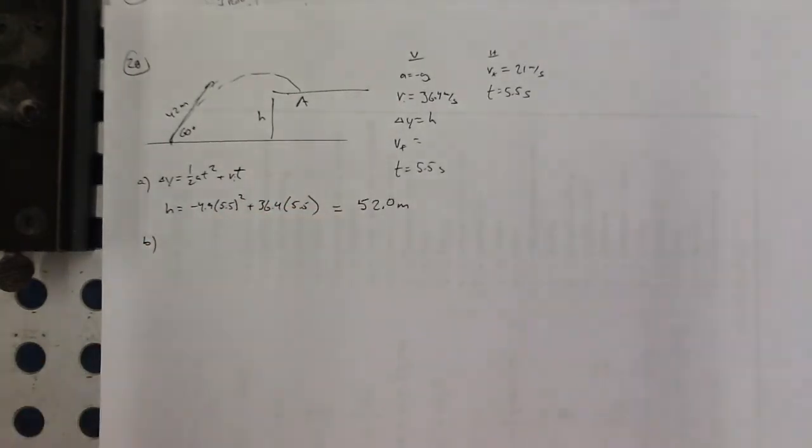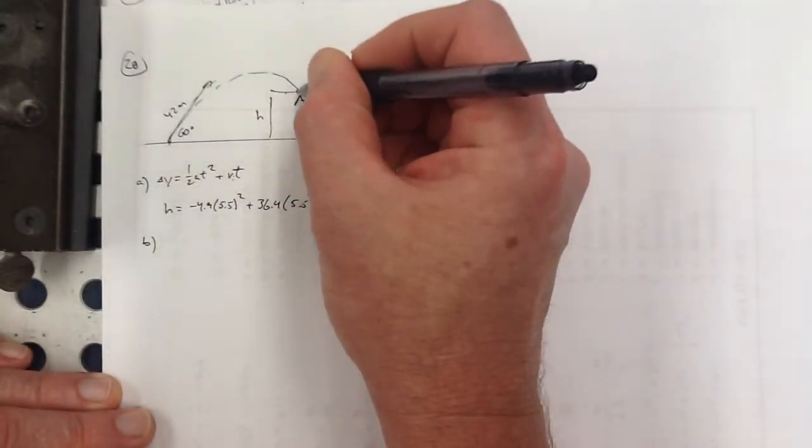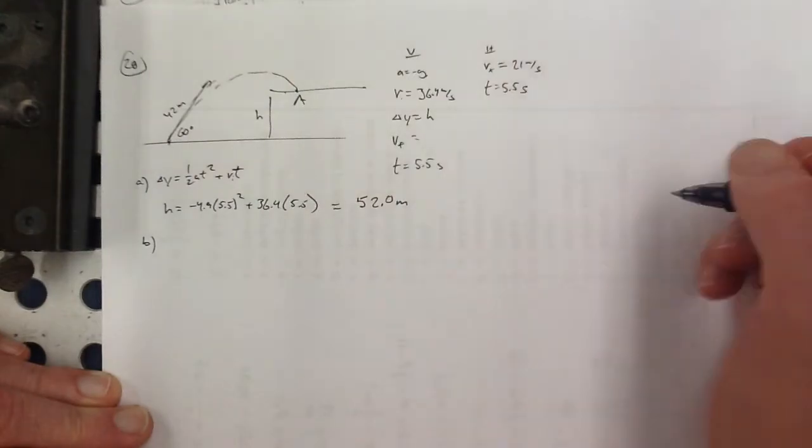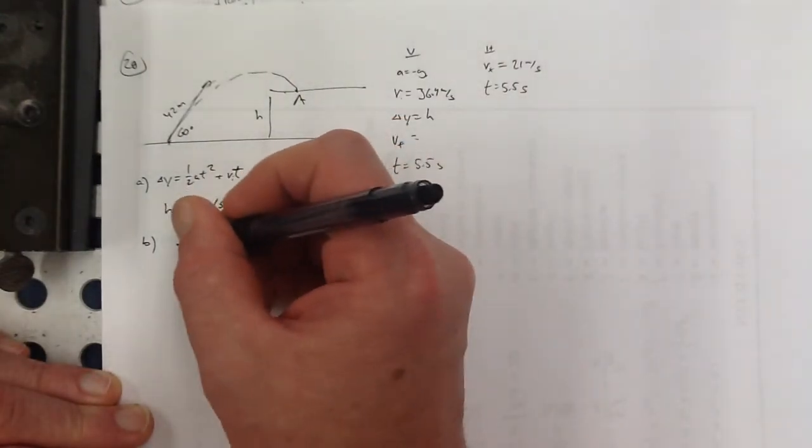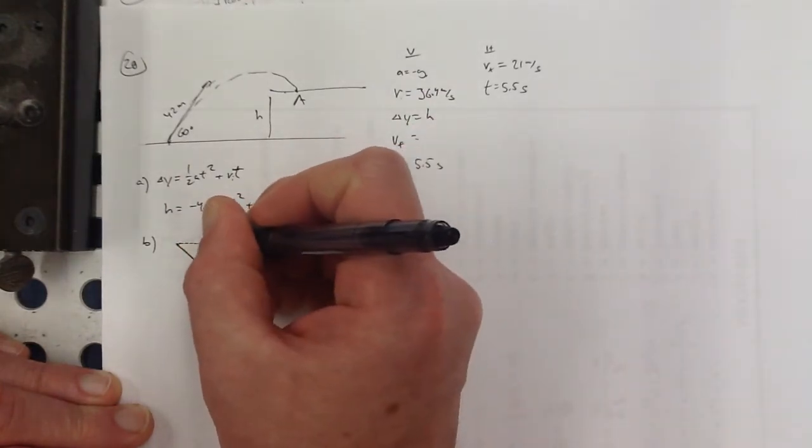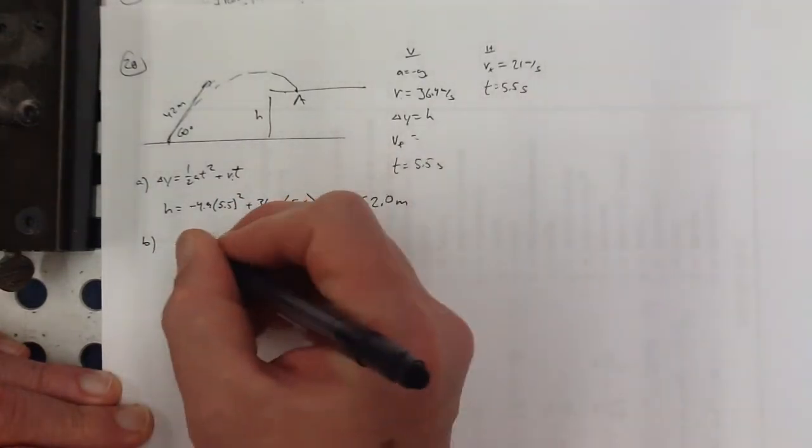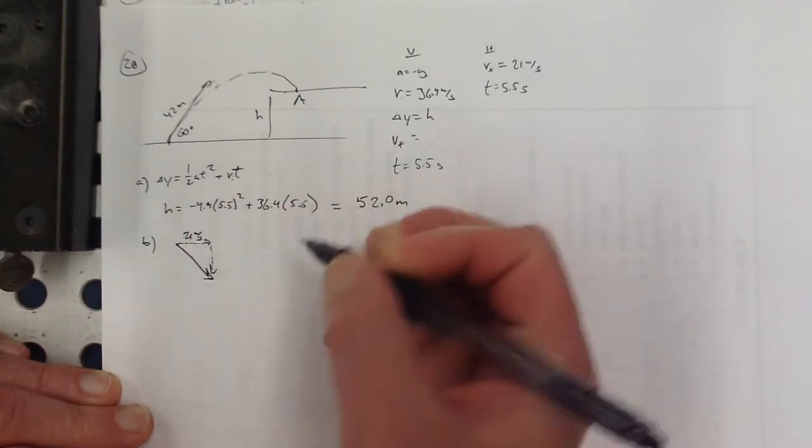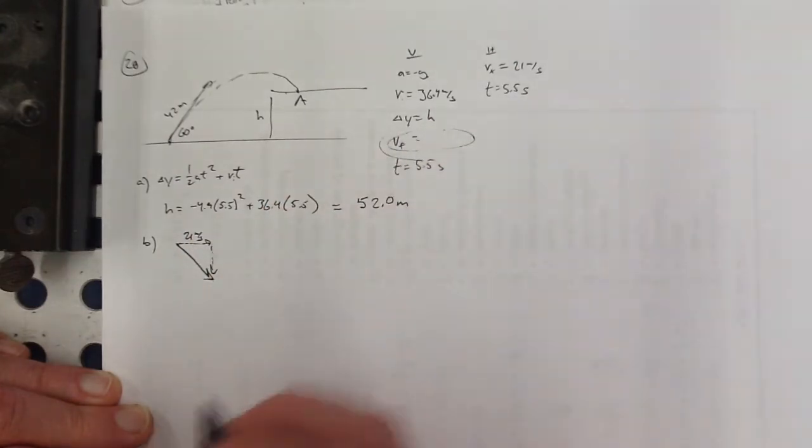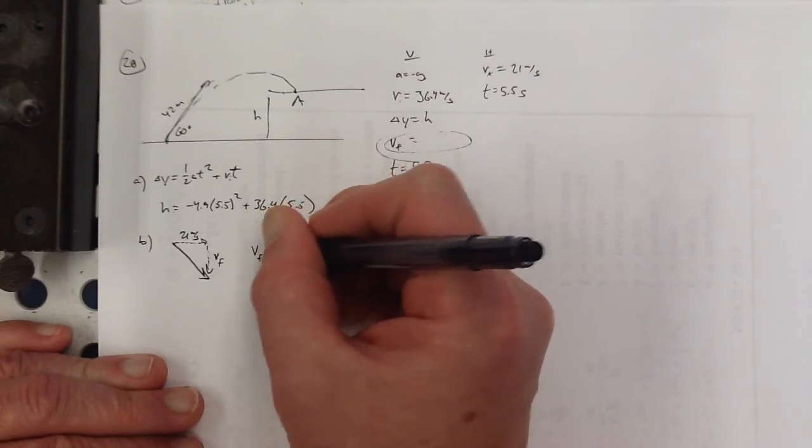And B. The speed of the stone just before impact. So when the stone's coming in here, the speed means we don't care about direction, we just want to know how fast it's going. Well, at that moment of impact, it's going to be going this way, and its velocity will have two components. Of course, the horizontal velocity is constant. That's still 21. But this is the VF after 5.5 seconds.